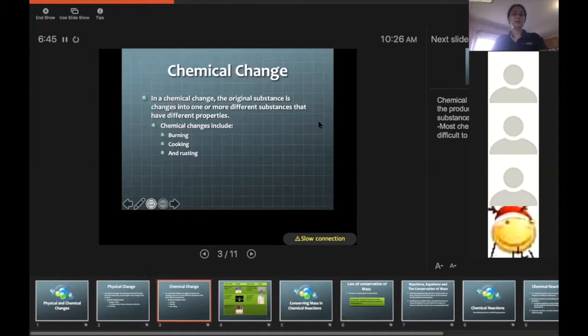A chemical change, however, is when the original substance is changed into one or more new or different substances with different properties. Chemical changes that you are probably familiar with are burning, cooking, and rusting.